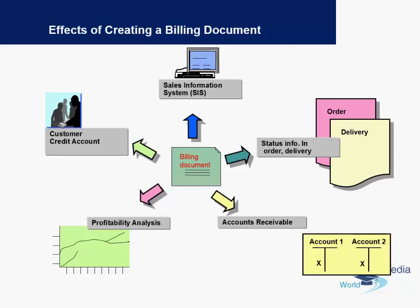So what happens exactly after an invoice or billing document is created? This information is transferred to the Sales Information System, which is SIS. This is mainly used by the sales force in a company who then decide upon the exact sale per salesperson, or sales per week, day, or month. This information system is very comprehensive and gives details right down to the material number. Updates in the delivery document and the sales order are also done automatically once a billing document is created, and this can be viewed in the document history of the respective documents in SAP.